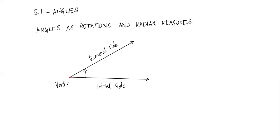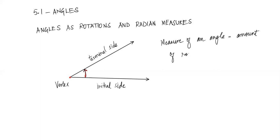The arrow, as you can see, for the angle that's formed also indicates that it started at the initial side and ended at the terminal side based on the direction of the arrow. The measure of an angle is the amount of rotation from its initial side to its terminal side.